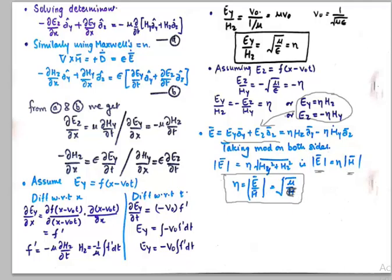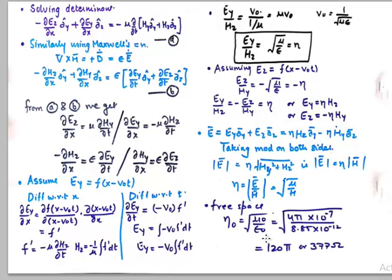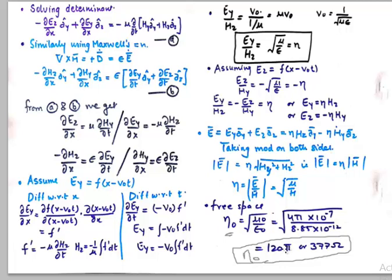This relation is super important. To calculate it for free space, we simply substitute μ₀ and ε₀: μ₀ = 4π × 10⁻⁷ and ε₀ = 8.85 × 10⁻¹², giving η₀ = 377 Ω as the characteristic impedance of air, also remembered as 120π ohms. That's about it for this video — if you liked it, give it a thumbs up, consider subscribing to the channel, and I'll see you in the next video. Take care, bye bye.